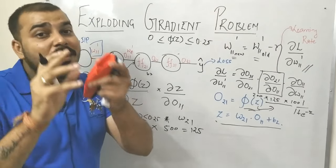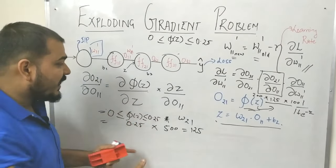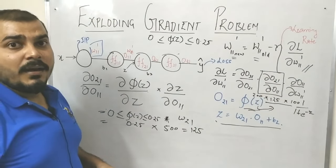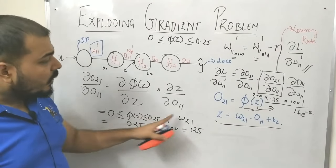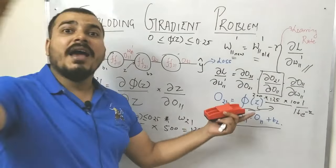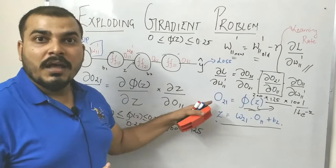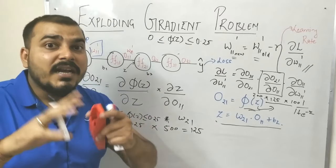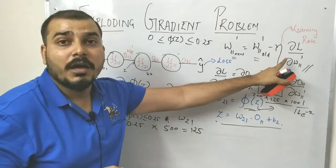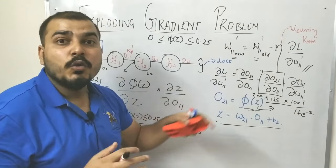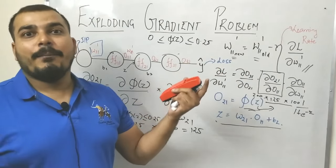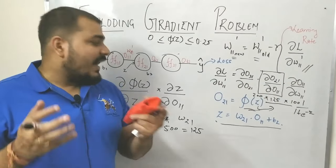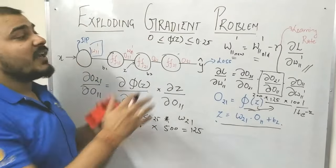In upcoming videos I'll show you how weights are actually initialized. Understand that whenever we find one derivative, if the weights are higher we get a higher derivative value. Even though the sigmoid derivative is between 0 and 0.25, because of large weights the derivative value becomes larger. In a deep neural network, due to the chain rule, the derivative with respect to w11 becomes a very big number. When applied in the weight updation formula, the old and new weights differ enormously, and after each backpropagation pass the model never reaches the global minimum. That is why weight initialization is very, very important.